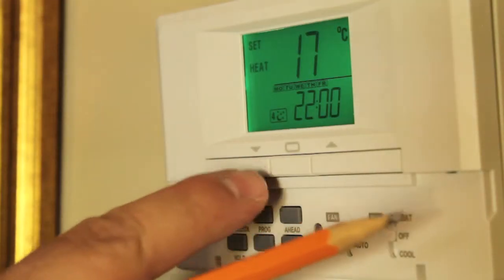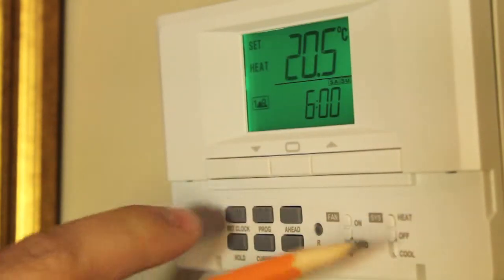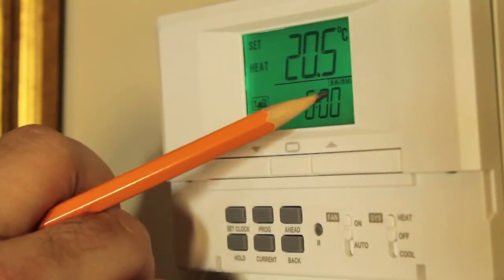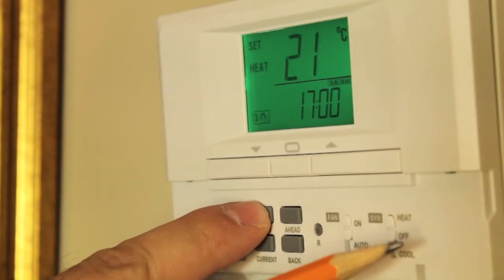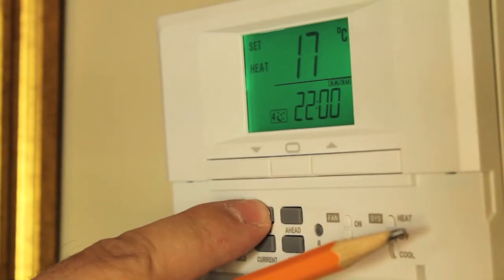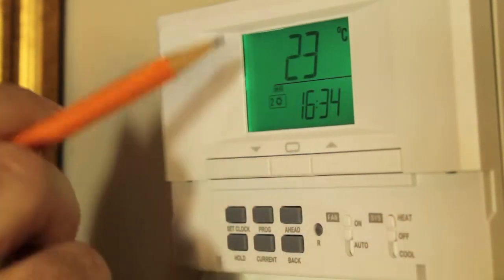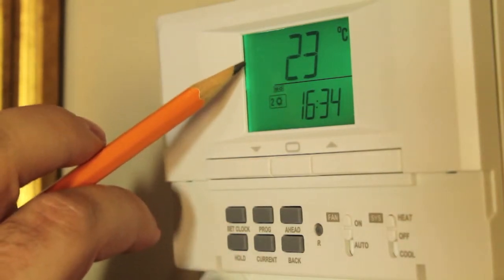On the M6003, when you press program again after program four for the weekdays, you'll move to program one for Saturday and Sunday. Pressing program again moves you through programs two, three, and four. And after program four, pressing program again will take you back to the main screen to the current time and the words set and heat will disappear.